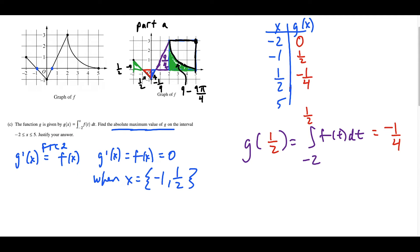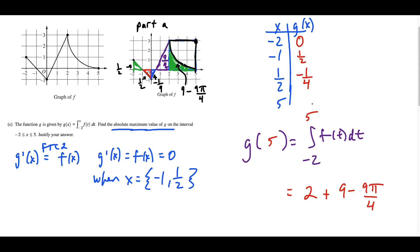For the last entry, g of 5 equals the integral from negative 2 to 5. One half minus one half is zero, then negative one fourth plus nine fourths equals eight over four which is two, plus nine minus nine pi over four. This simplifies to 11 minus nine pi over four. Now we pick the biggest value. For number sense, even if we round pi up absurdly to 4, we'd get 11 minus 9 equals 2, which is still bigger than all other values. So the absolute maximum value of g occurs at x equals 5.